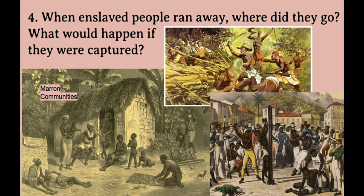These maroon communities developed organically out of groups of people who ran away separately or together, and they may go back and help friends and family escape subsequently. These were long-standing communities that developed over hundreds of years, between the 1600s and the 1800s. They developed community structures, buildings, and sometimes fortifications. There were children born in these communities who had never known a life of slavery, and they developed a culture all their own.